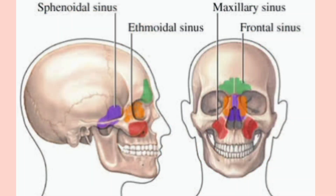Other examples of pneumatic bones include the frontal bone with the frontal air sinus, the ethmoidal bone with the ethmoidal air sinus, and the sphenoid bone with the sphenoidal air sinus. However, the largest air sinus is in the maxilla, called the maxillary air sinus.